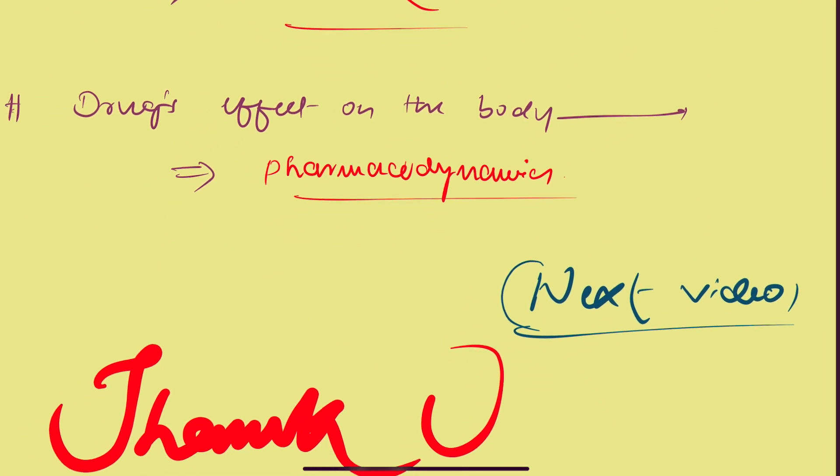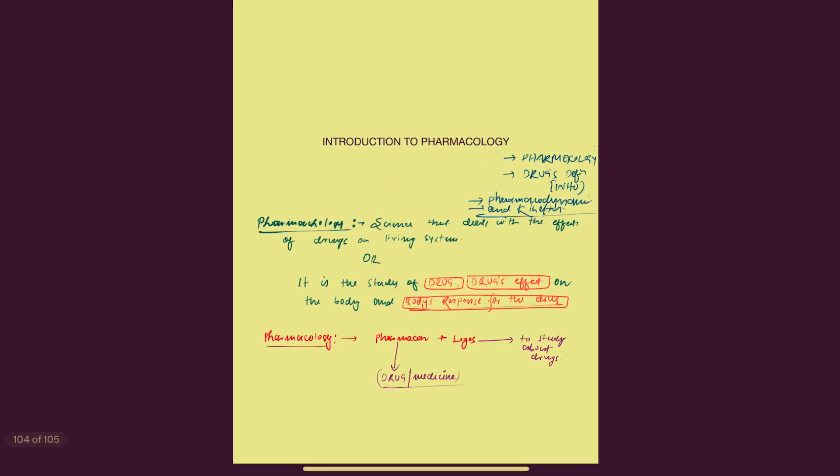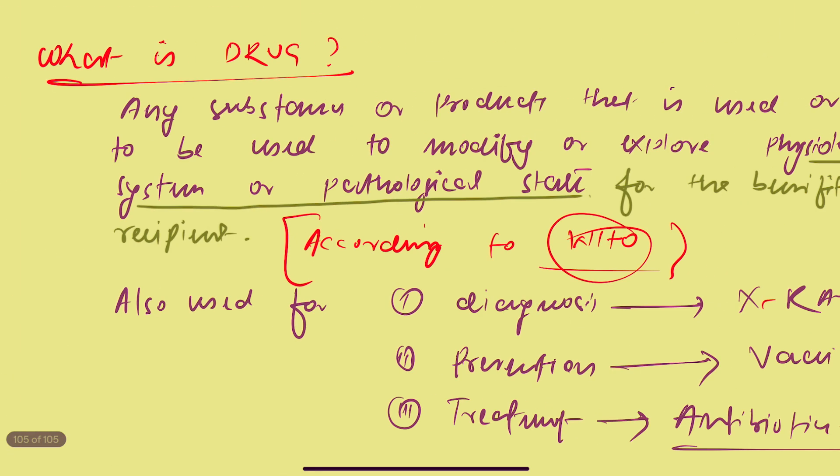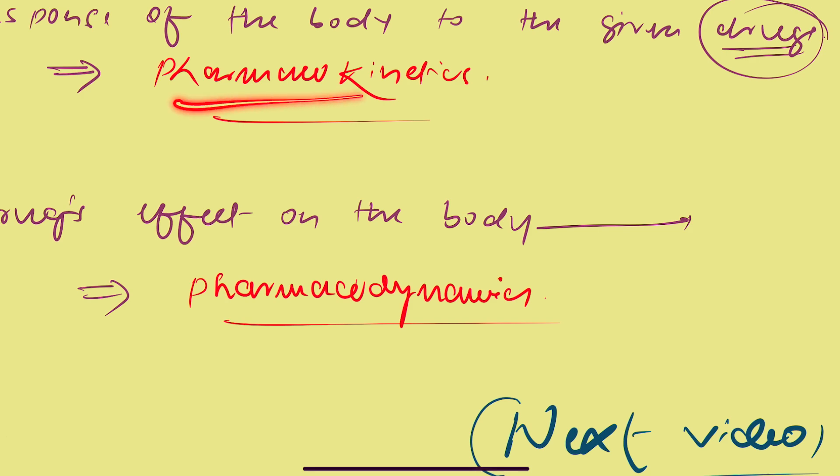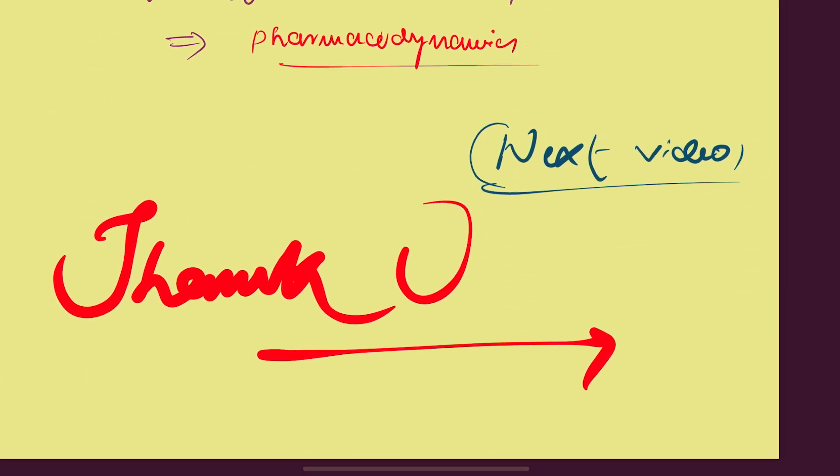So here basically we have discussed two or three topics of pharmacology, which are the definition of pharmacology and pharmacokinetics and pharmacodynamics. In the later video, in the later discussion, we will be discussing what is pharmacokinetics in elaborate way, which is absorption and distribution, metabolism and excretion of the drugs, and what is pharmacodynamics. So for this video, this is all. Thank you.